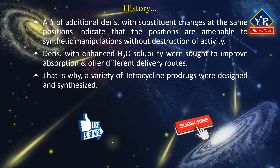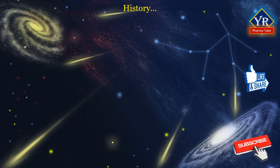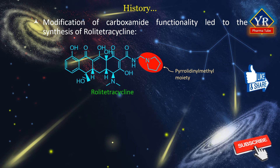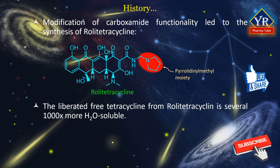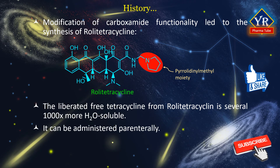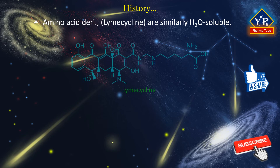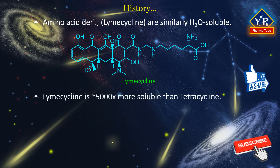For these reasons, a variety of tetracycline products were designed and synthesized. Some compounds were developed by modifying the carboxamide functionality of the tetracycline nucleus. For example, the pyrrolidinylmethyl derivative, rolitetracycline, readily liberates the free tetracycline but is several thousand times more water-soluble. It is an N-Mannich-based prodrug prepared from tetracycline by condensation with pyrrolidine and formaldehyde. Unlike conventional tetracyclines, rolitetracycline can be administered parenterally. A number of amino acid derivatives such as the lysinomethyl tetracycline known as limecycline are similarly water-soluble, approximately 5,000 times more soluble than tetracycline base. Limecycline was introduced by Farmitalia in 1963.